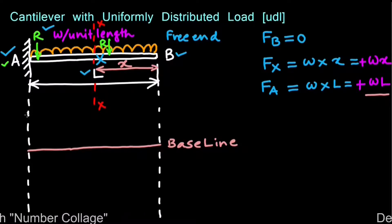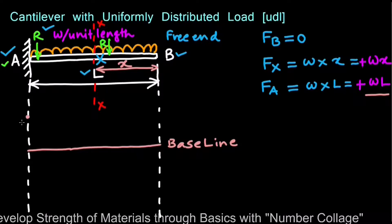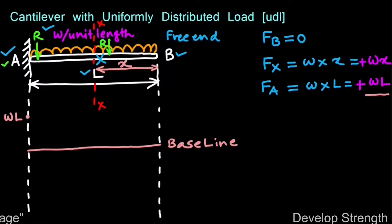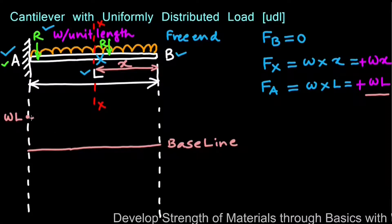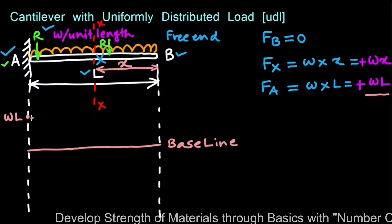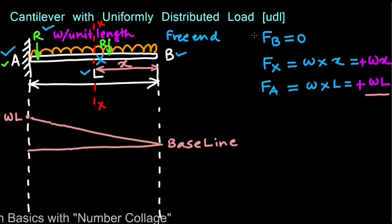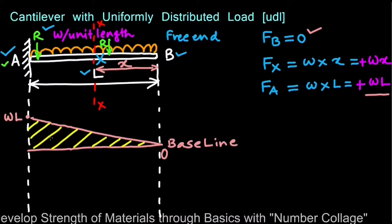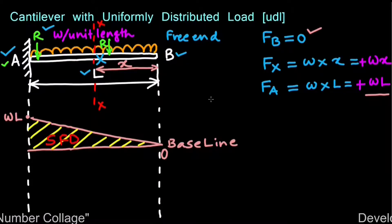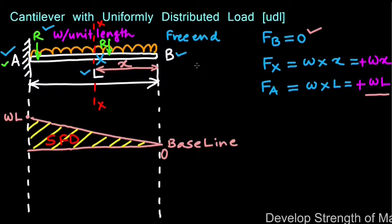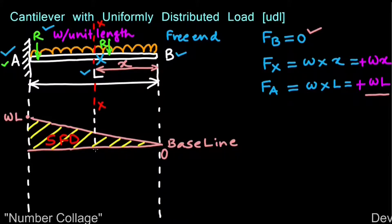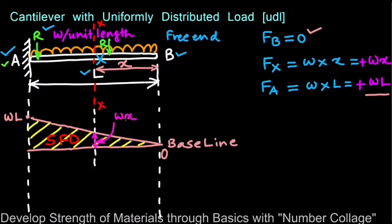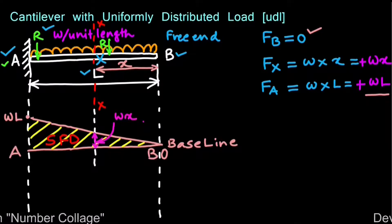Since it is a uniformly distributed load, the shear force gradually reduces from the maximum value WL to the minimum value FB which is 0. So this triangle indicates the shear force diagram for this UDL cantilever beam. The value of shear force at section XX extended downwards will be Wx.